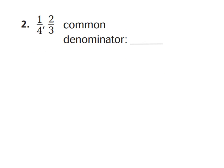Let's do number 2 together. We have 1 fourth and 2 thirds. We want to find a common denominator first. Think of your multiples of 4: 4, 8, 12. And for 3: 3, 6, 9, 12. You should always try to find the least common denominator, which is the one that shows up first when you list your multiples, because that will be easiest when you ever want to simplify fractions. So the least common denominator is 12.